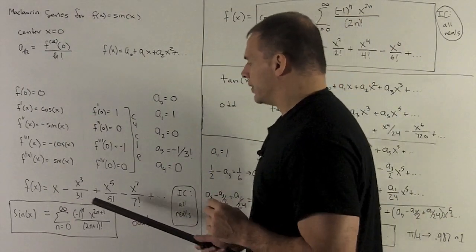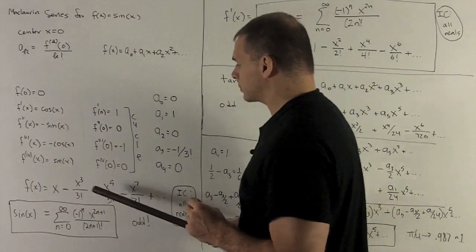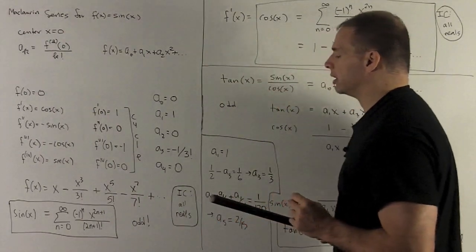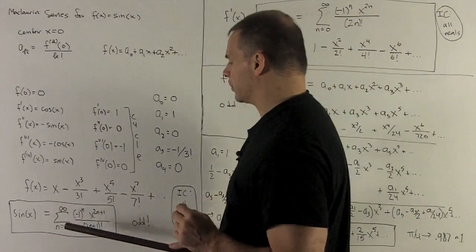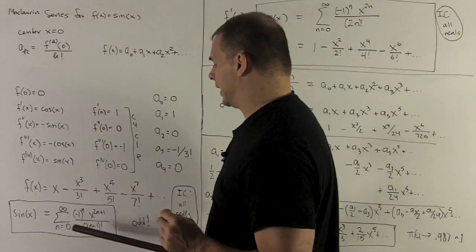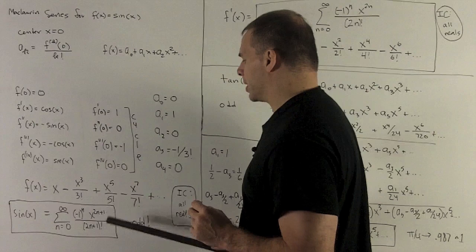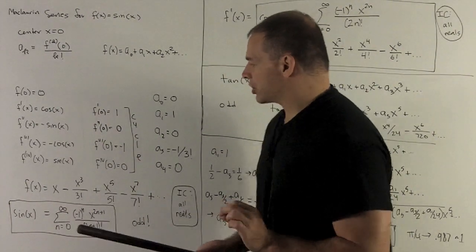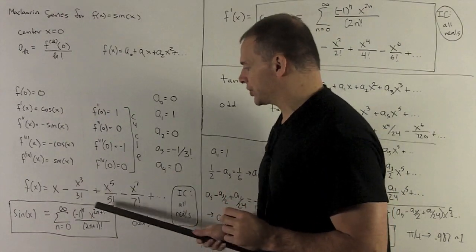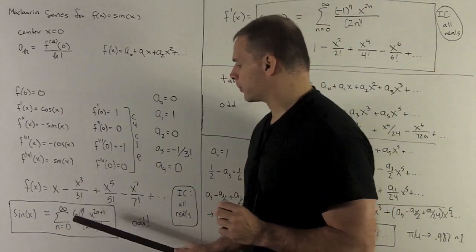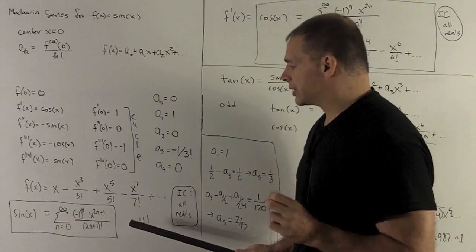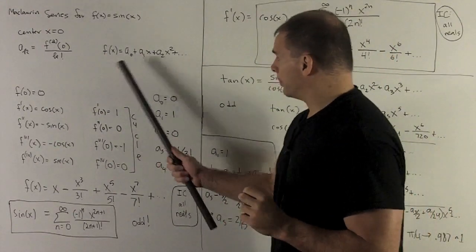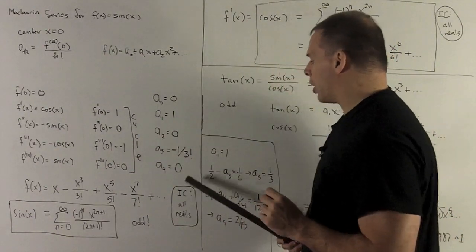What you notice is this is just the odd powers of x divided by the corresponding factorial, and we alternate the signs. In closed form, sine x equals the sum from 0 to infinity of (minus 1)ⁿ times x to the 2n+1 over (2n+1) factorial. Using the ratio test on our general term, we can show the domain for our Maclaurin series is all real numbers.